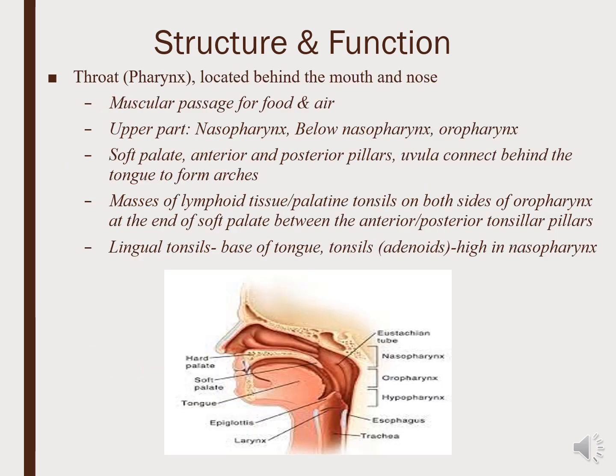The throat, or pharynx, is located behind the mouth and nose, and it's a passage for food and air. The upper part is the nasopharynx, and the lower part is the oropharynx that connects down into the esophagus. There are also tonsils on either side in the oro-nasopharynx space.